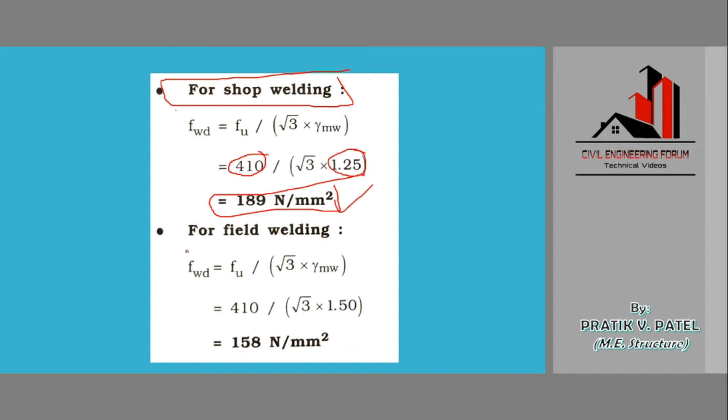For field welding, again fu upon square root 3 into gamma mw, formula will remain same. The thing that will differ is this, it would be 1.5, so answer will differ, 158 newton per mm square.